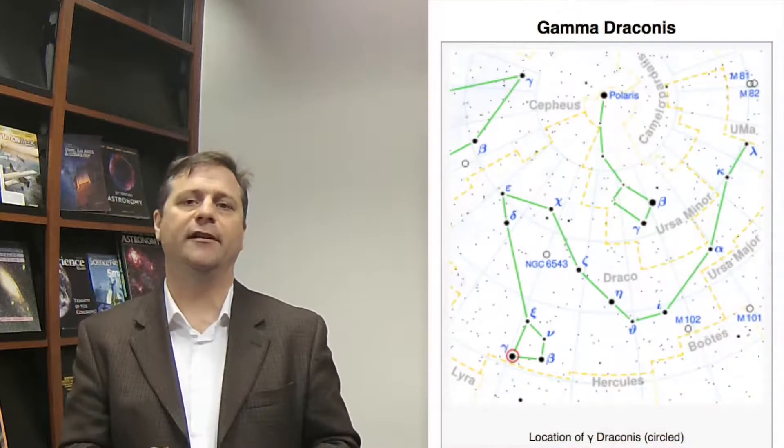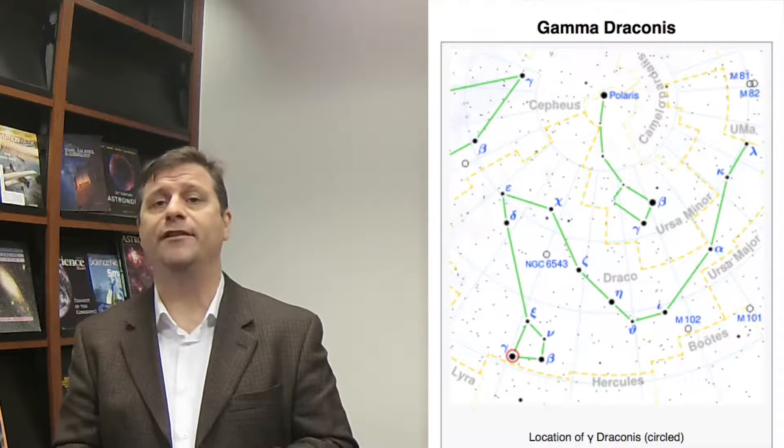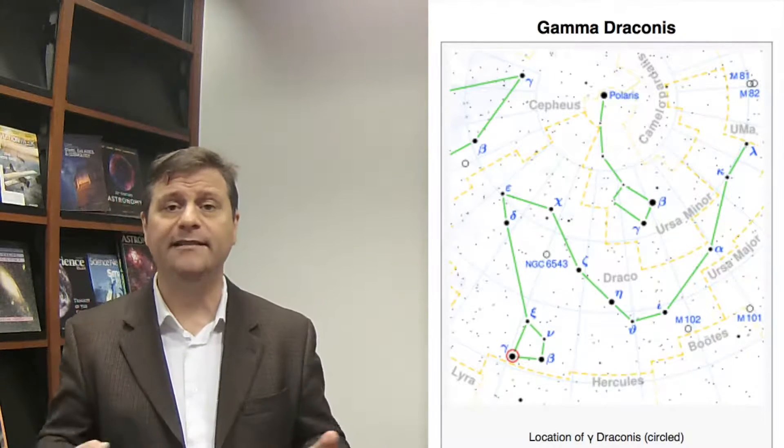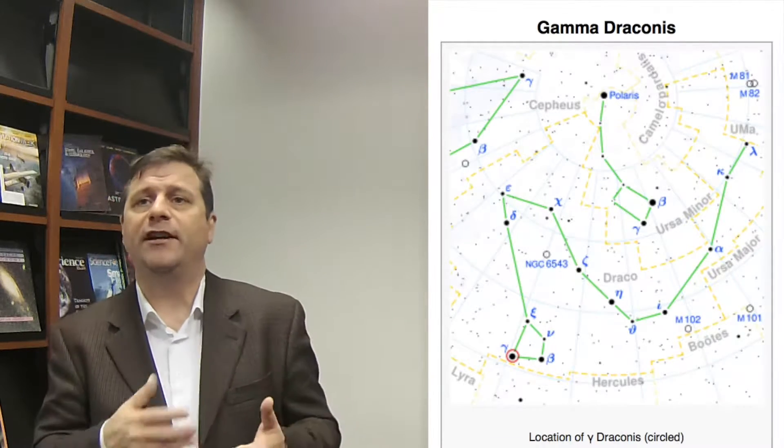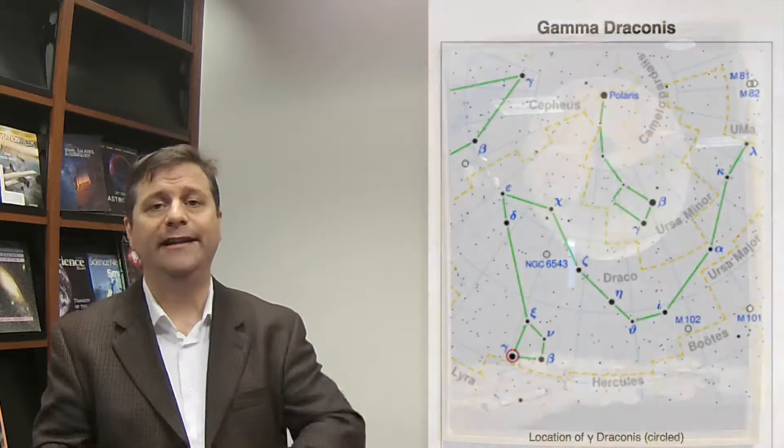In 1674, Robert Hooke tried to do so with Gamma Draconis, which is a bright star in the constellation Draco, which is easily measured in London because it passes straight overhead. He tried to actually see the parallax of that star and he wasn't entirely successful, but he at least paved the way.